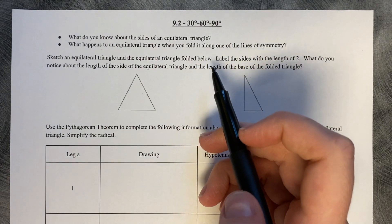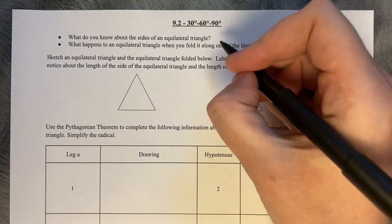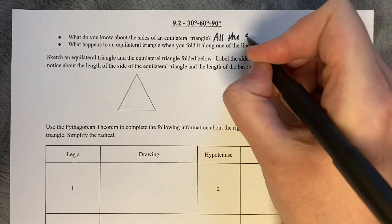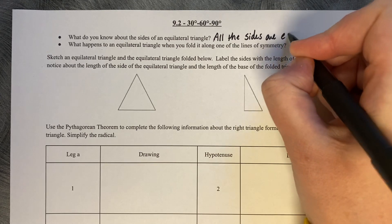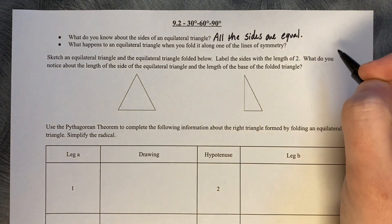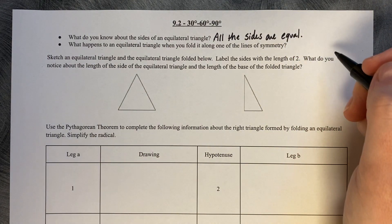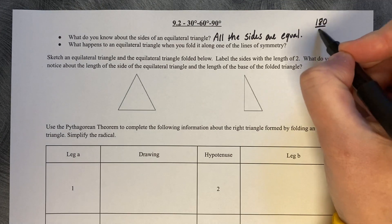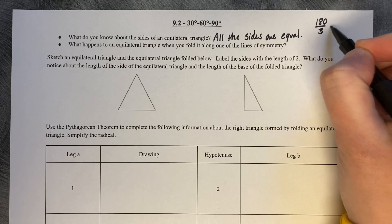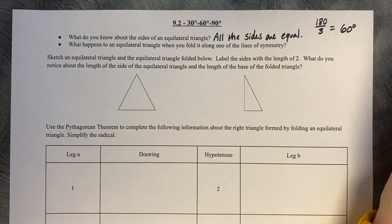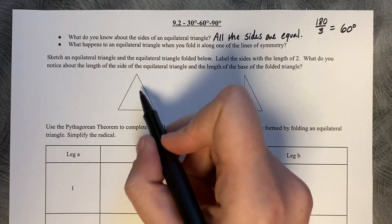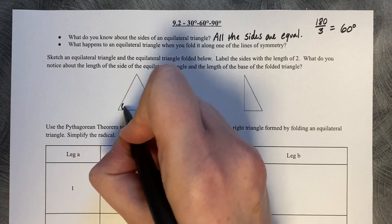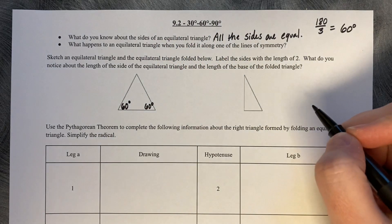What do you know about all the sides of an equilateral triangle? All the sides are equal. And if all the sides are equal, what do we know about the angles? All the angles are equal, which means it's going to be 180 degrees divided by 3, which means that each corner angle will be 60 degrees. If this is a diagram of an equilateral triangle, then each corner is going to be 60 degrees.